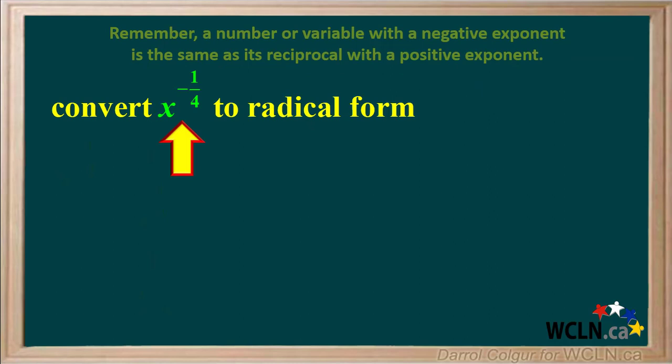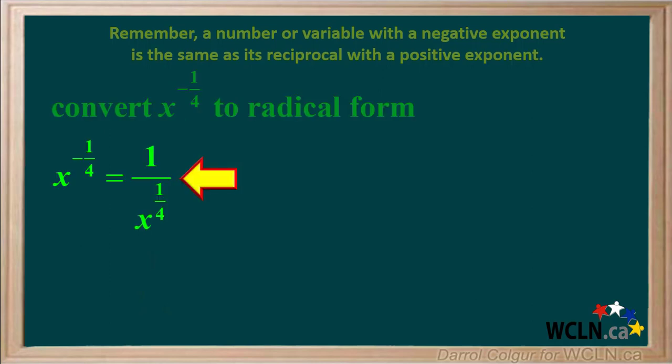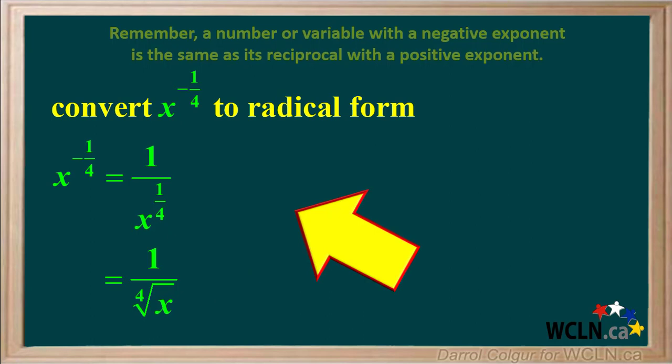Here's an example. We're asked to convert x to the negative one quarter to radical form. x to the negative one quarter is the reciprocal of x to the positive one quarter, or 1 over x to the one quarter. And x to the one quarter can be converted to the radical — the fourth root of x. So here's the entire solution to this problem. If you like, pause the video and review the steps yourself.